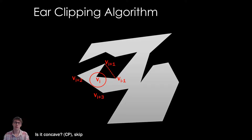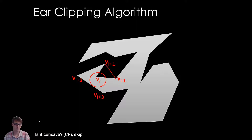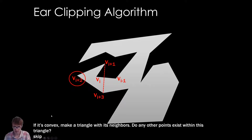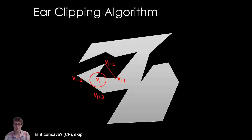Cross products can tell me the winding — which way the vertex is facing. If it's concave, no big deal: I skip it, because you can't clip a concave vertex. So we move on.